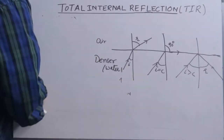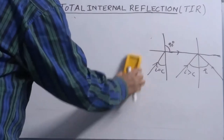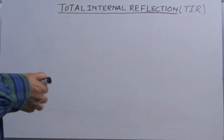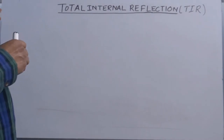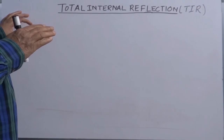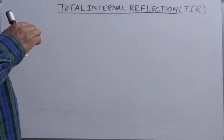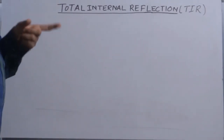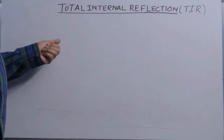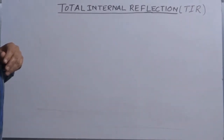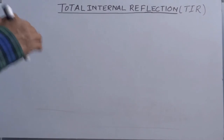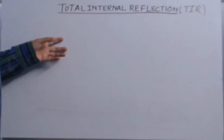What are the conditions to obtain total internal reflection? There are two conditions. Number one: the ray of light must travel from denser to rarer medium. Number two: the angle of incidence in the denser medium must be greater than the critical angle. The critical angle has a fixed value for a given pair of mediums; when the medium pair changes, the value of critical angle will also change.